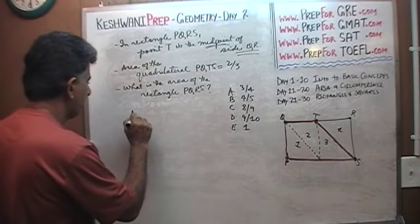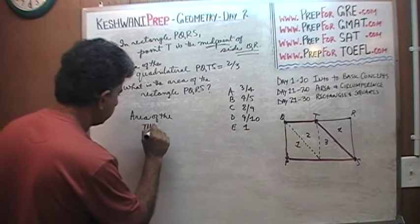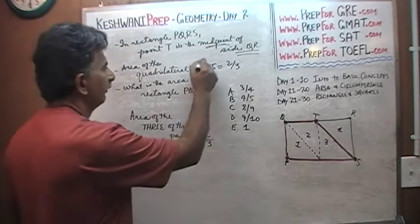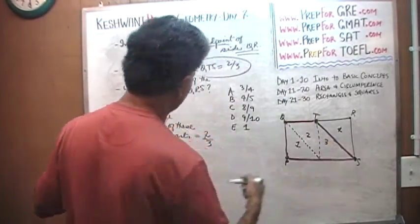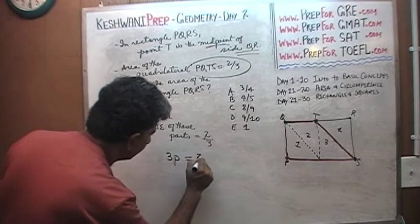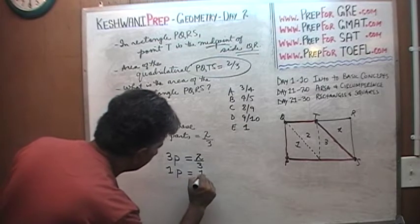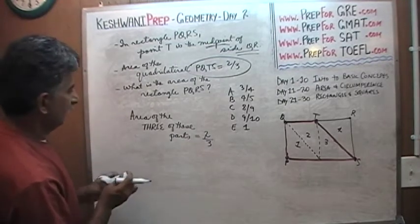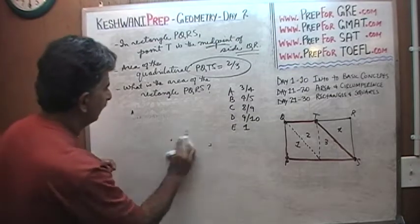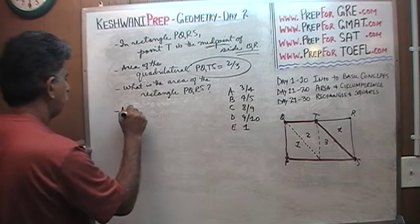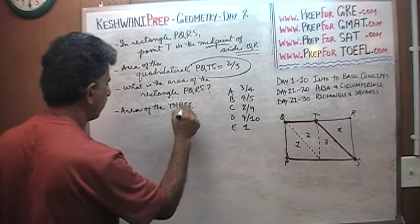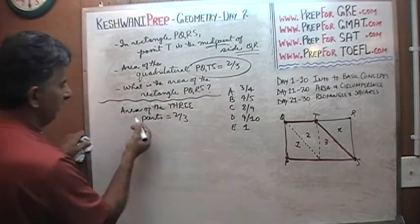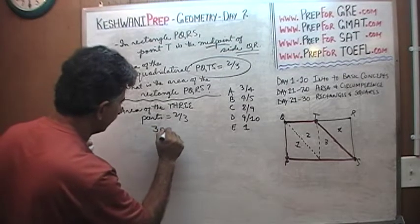We are told that the area of the three of these parts equals two-thirds. That's what this is. Area of P, Q, T, S, which is comprising of three parts, it equals two-thirds. So if three parts equal two-thirds, then one part must equal one-third of two-thirds. I have taken up too much room here. I was too generous in writing that area of the three parts equal two-thirds. This is not part of the problem. This is our solution now. The problem ended there. Area of the three parts is two-thirds. So three parts equals two-thirds.